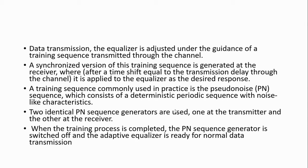In data transmission, the equalizer is adjusted by filter coefficient by using the training sequence transmitted through the channel. The normalized version of the training sequence is generated at the receiver and applied to the equalizer to get the desired response. The training sequence is commonly used as a pseudo-noise (PN) sequence, which consists of a periodic sequence with a noise-like characteristic. Two identical PN sequence generators are used — one at the transmitter and another at the receiver.